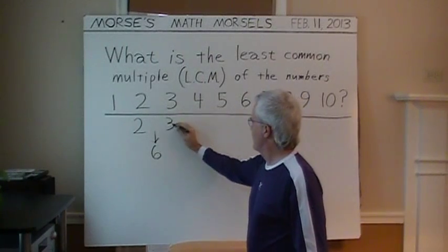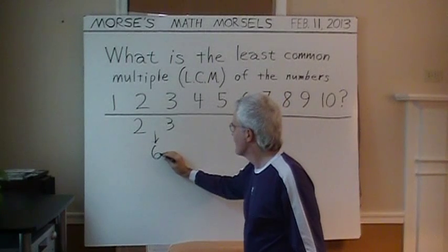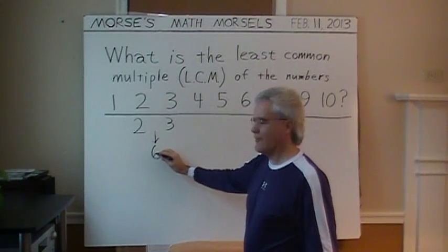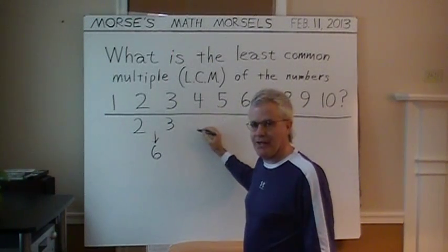How about 6 and 4? What is their least common multiple? Well, if you add some 6's, you'll get 6 and then 12. And if you start adding by 4's, you'll go 4, 8, 12.